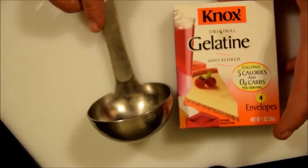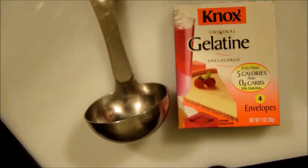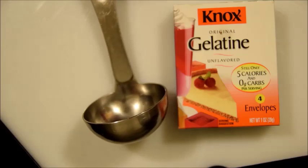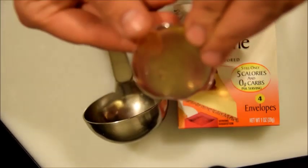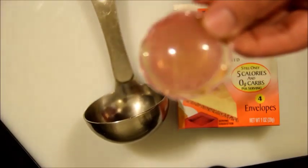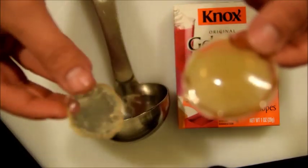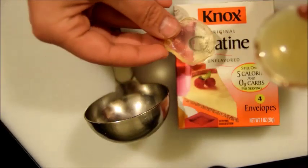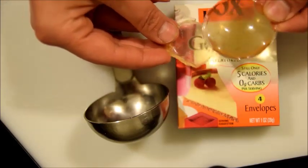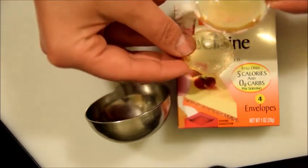To begin, all you need is a convex shape, some Knox gelatin, and some water. I found that using a soup ladle works best because it gives you the nice depth that you need for magnification. I did try using this on a smaller convex shape, and it didn't work quite as well. As you can see, if you compare, one magnifies better than the other.